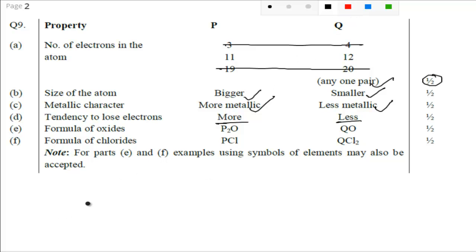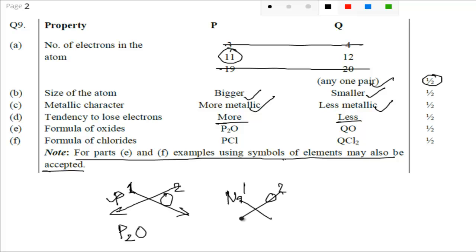Formula for oxides. Group 1, you know valence is one. P the valence is one and oxide, you know the valence is two. You just cross multiply it and you will get P2O. You can also use the symbol for sodium also as it is written here for parts E and F - examples using symbol of elements may also be accepted. It's better to use P but you can use the symbol like sodium. Sodium is valence one, oxygen is two, so it will be Na2O.